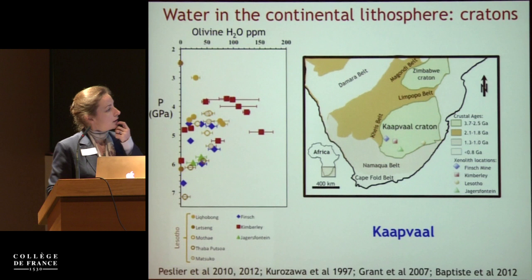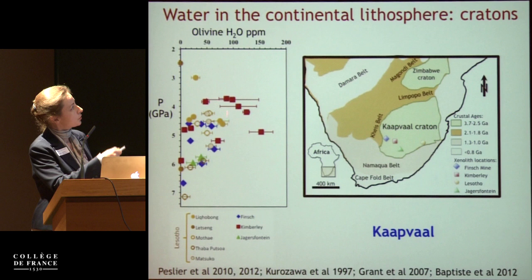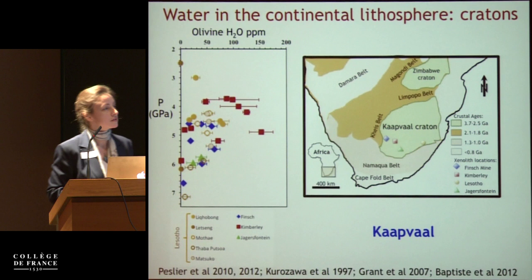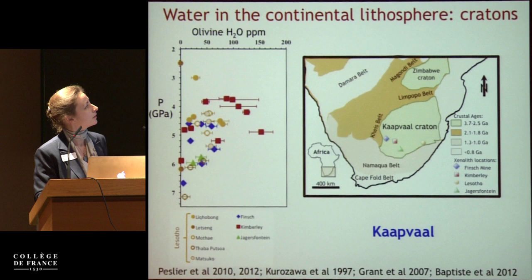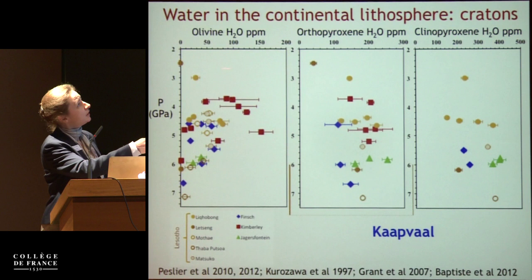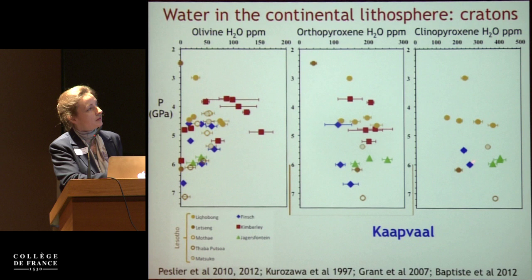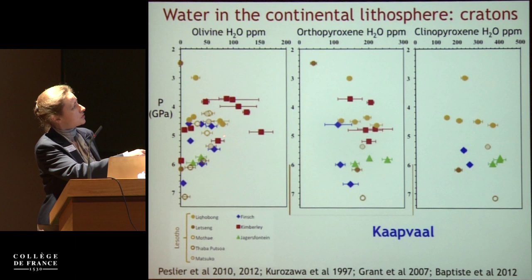We'll start with the Kaapvaal craton in southern Africa. I have data from multiple locations — different xenolith suites each brought by one kimberlite pipe. Shown here is water content in olivine, orthopyroxene, and clinopyroxene versus pressure. The pyroxene water contents do not show a systematic variation with pressure; however, in olivine we see a decrease in water content at the highest depths — from 5 to 6.5 GPa — and the deepest samples are very dry.